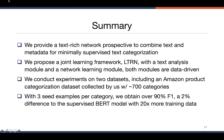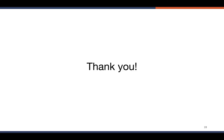Wrapping things up, in this project we provided a text-rich network perspective to combine text and metadata for minimally supervised text categorization. We proposed a joint learning framework with a text analysis module and a network learning module, both data-driven. We did experiments on two datasets, including one Amazon product categorization dataset with around 700 categories, which is quite challenging. We achieved significant performance gains compared to all baseline methods, and on the Amazon dataset we are nearing the performance of a supervised BERT model. For more details, please take a look at our paper. Thank you for listening.